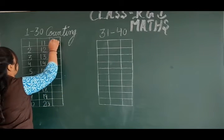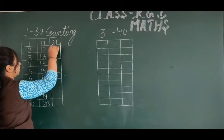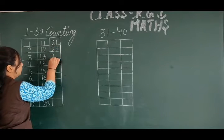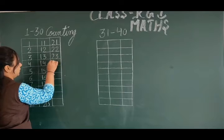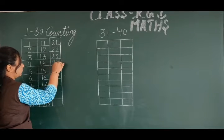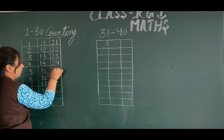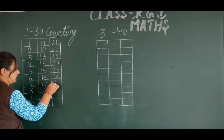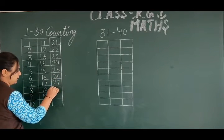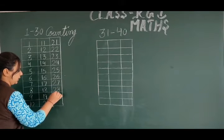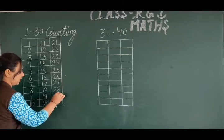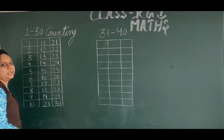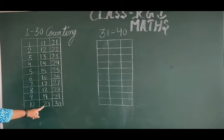come with me and count. 2, 1, 21. 2, 2, 22. 2, 3, 23. 2, 4, 24. 2, 5, 25. 2, 6, 26. 2, 7, 27. 2, 8, 28. 2, 9, 29. 3, 0, 30. 1 to 30 counting is completed.